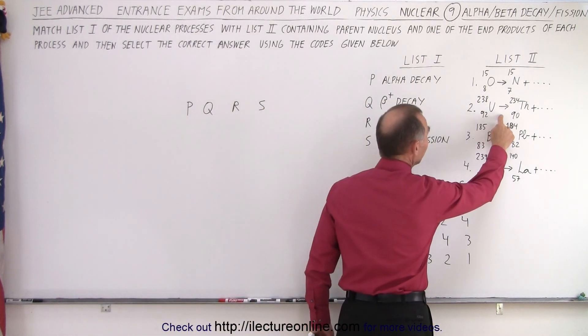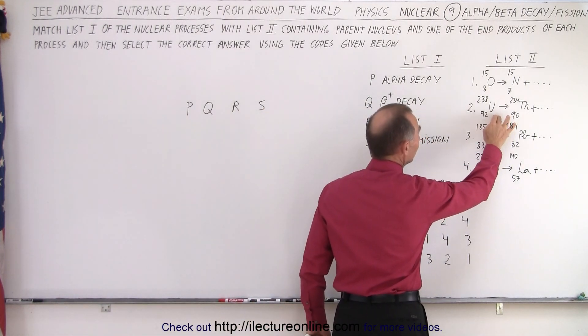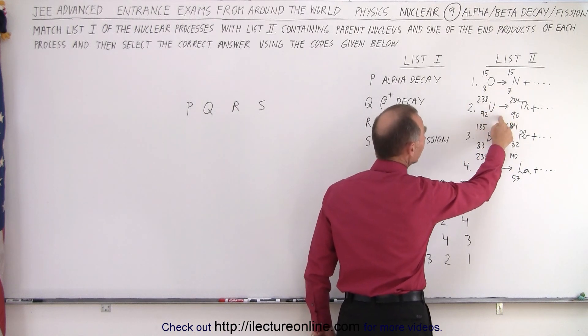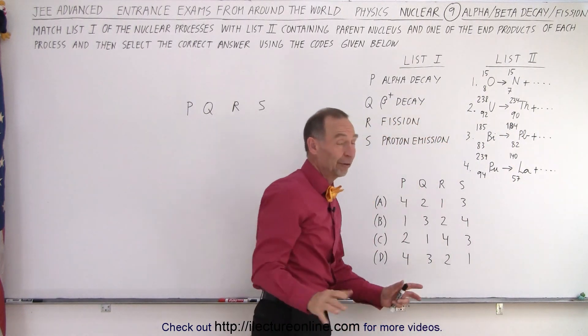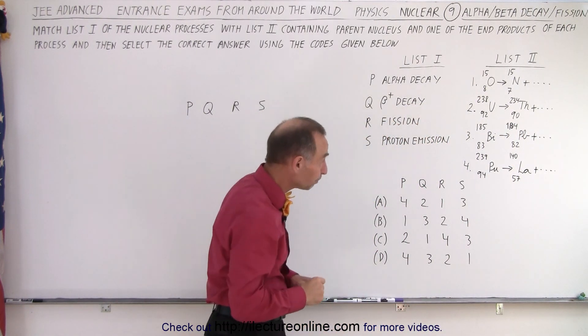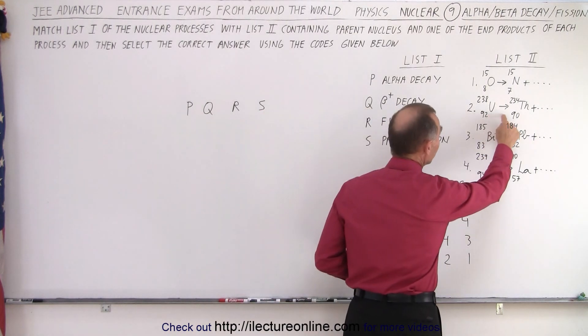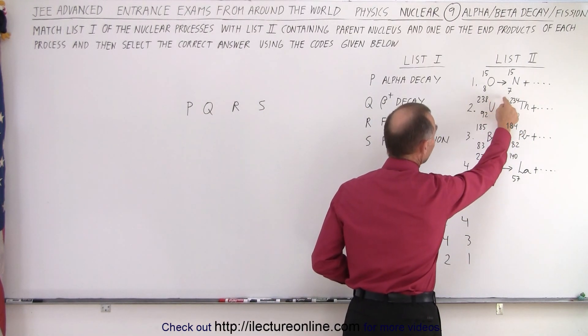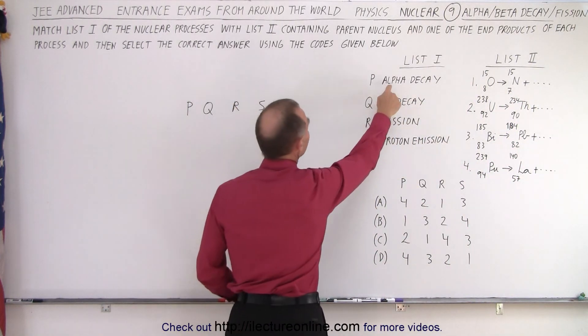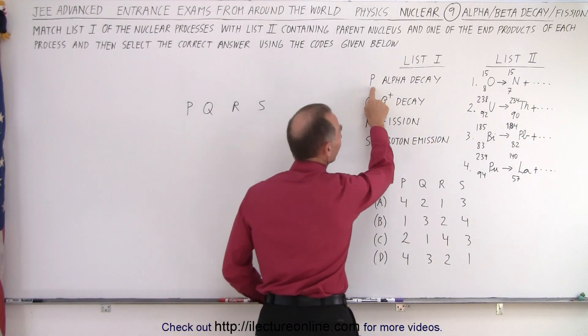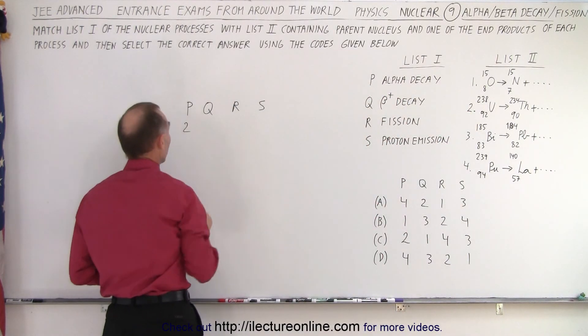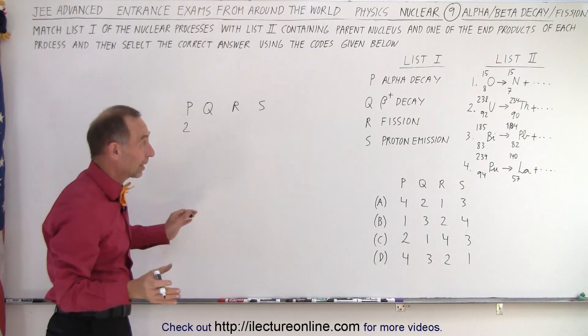Number two is a very common thing that we see in the textbook where we have uranium-238 decaying via an alpha decay to thorium-234. Very, very known kind of reaction. And notice you're losing two protons, you're losing four nucleons. Four nuclei, two protons. You know that's an alpha particle so we call that alpha decay. So P matches up with two. So I'm going to put a two there. So that may be all you need to do to get the correct answer.